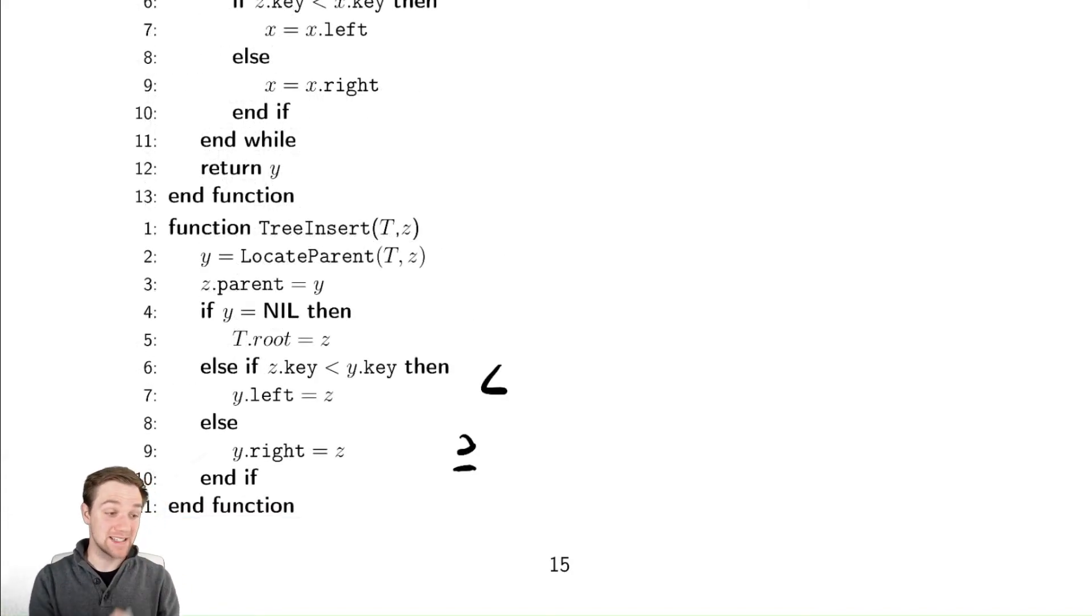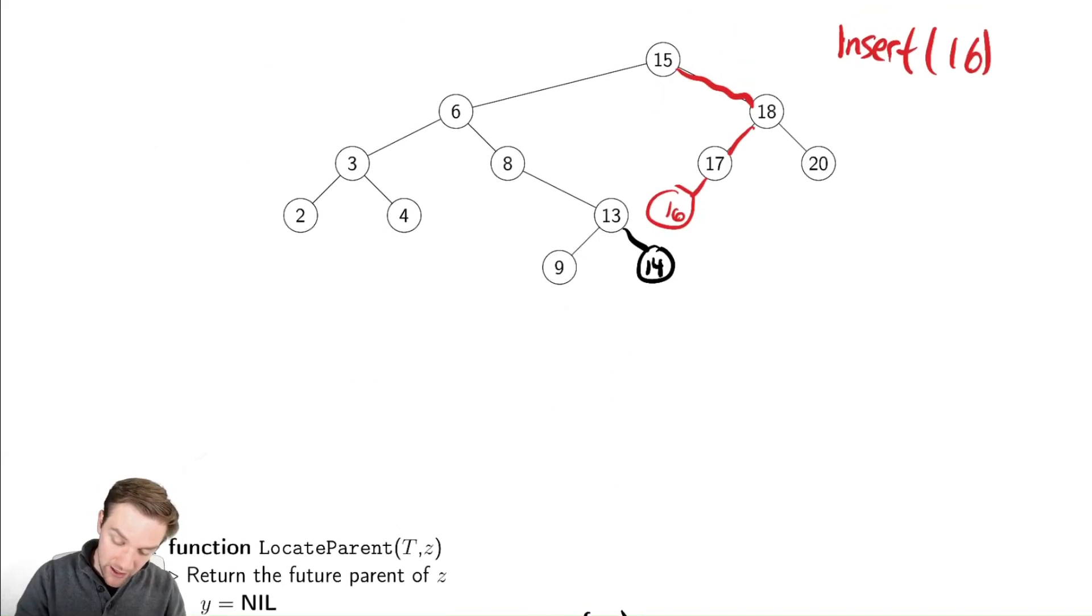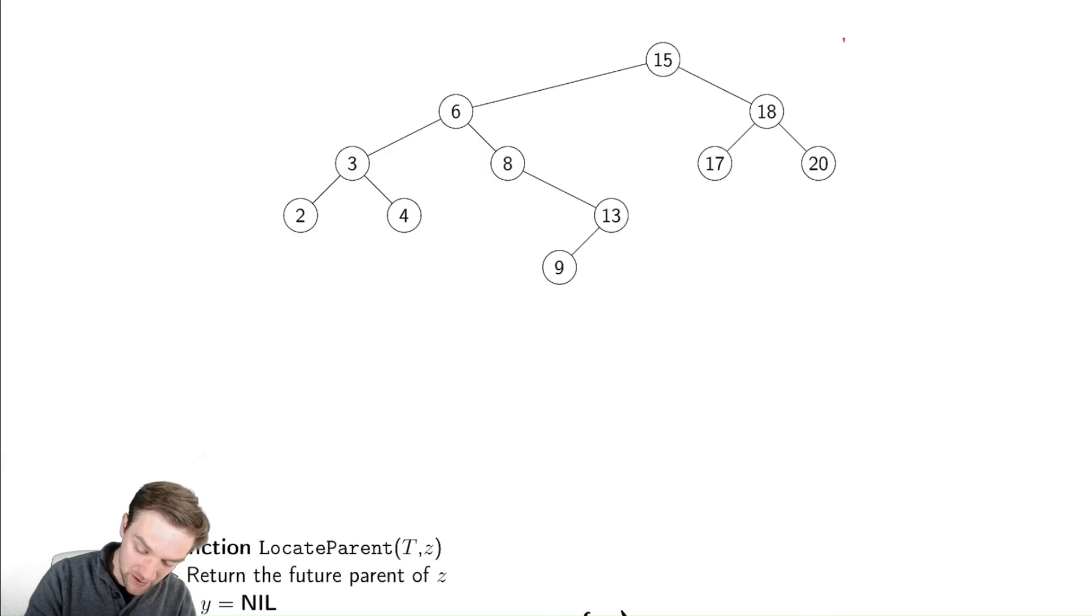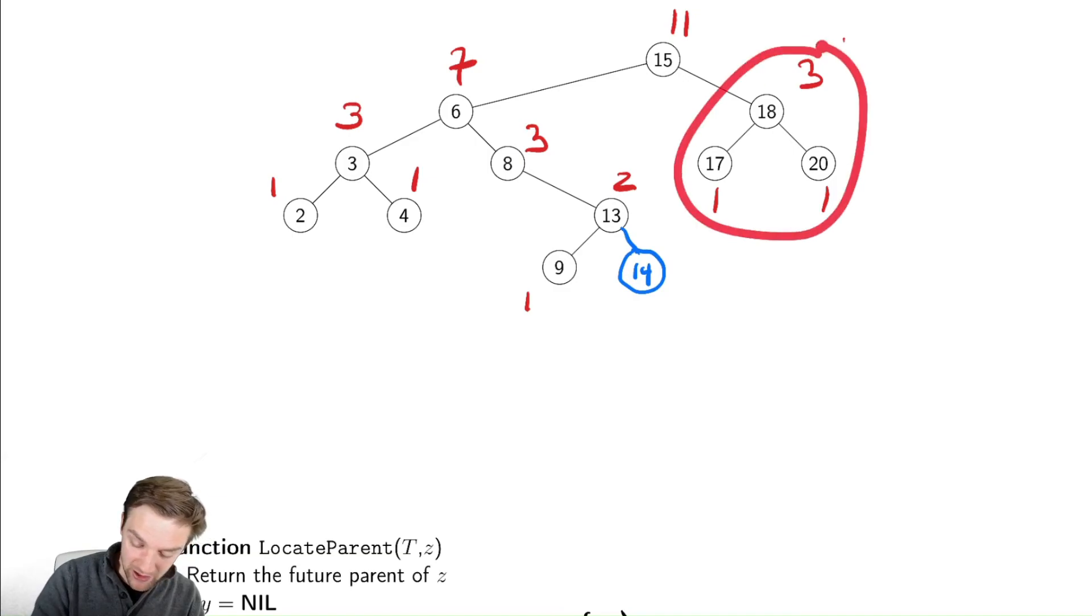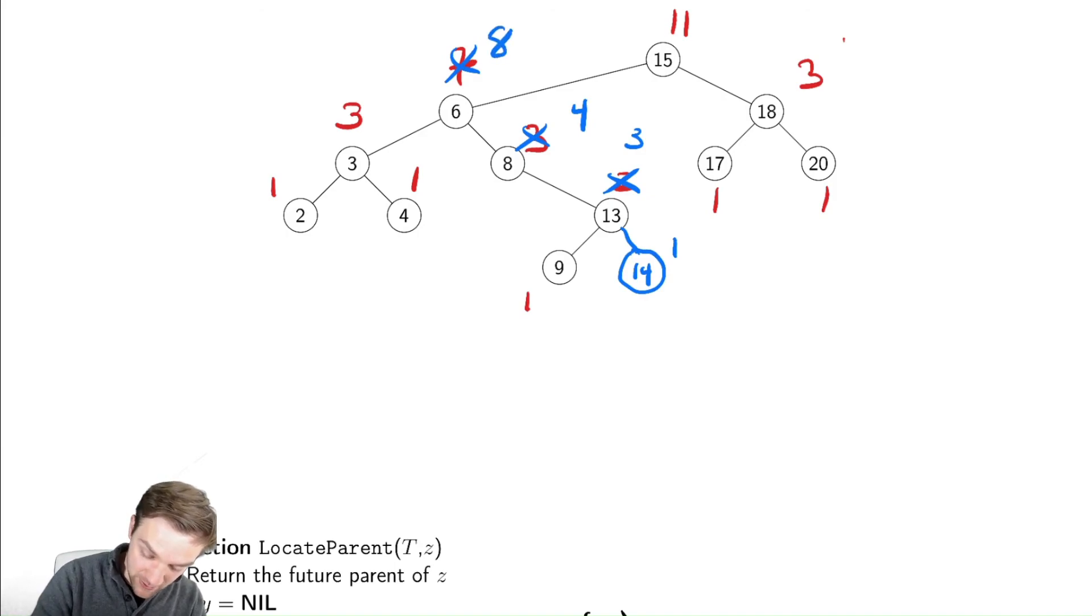One last thing we'll comment on is how do we update the sizes of things when we do this insertion. Let's scroll up. When I inserted this node let's fill in the sizes beforehand. So let's undo this insertion of 14 and then redo it again. The sizes of this tree were originally. Now let's imagine I inserted my node 14 over here. After having performed that insertion what did I break? Well I didn't break anything over here and I didn't break anything over here so that's good but now I'm lying. This node has a size of 1 which means that this one up here has a size of 3 which means this one up here has a size of 4 which means this one up here has a size of 8 which means that this one up here has a size of 12.